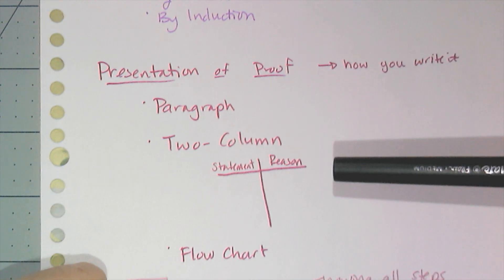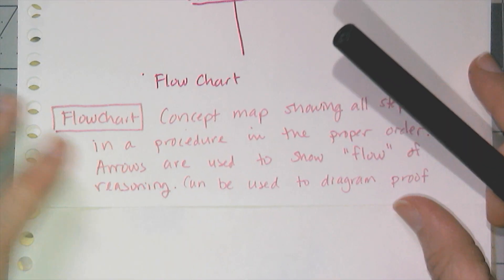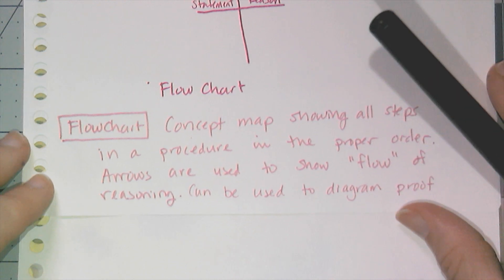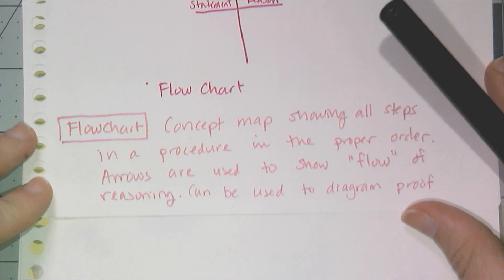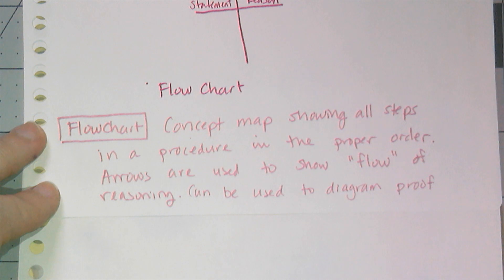And then we have a third type that we're going to look at, which is a flowchart. Now a flowchart is something that people actually use in the real world, especially people who have to write instructions for things or code. And basically it's just a concept map that shows all the steps in a procedure in the proper order. And we use arrows to show the flow of the reasoning or the steps. And we can use these to diagram our proof or to actually be a proof.